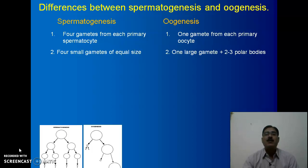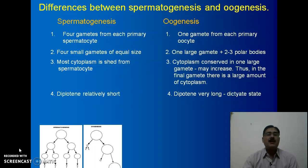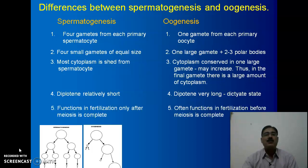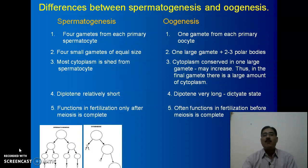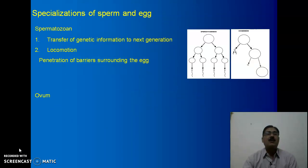In oogenesis, only one large gamete plus two to three polar bodies are formed. There is equal distribution of cytoplasm in the spermatocyte, while in oogenesis the cytoplasm is conserved in one large gamete — thus there is unequal distribution of cytoplasm. The diplotene stage of meiosis one is relatively very short in spermatogenesis, while it is very long in oogenesis and there is a dictyate stage. In spermatogenesis, the cell can function in fertilization only after meiosis is complete, while in oogenesis it often functions in fertilization even before the completion of meiosis.